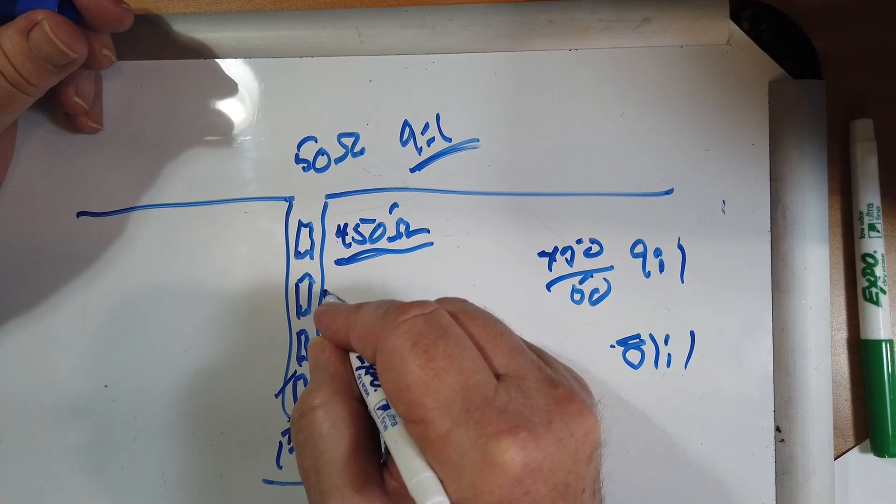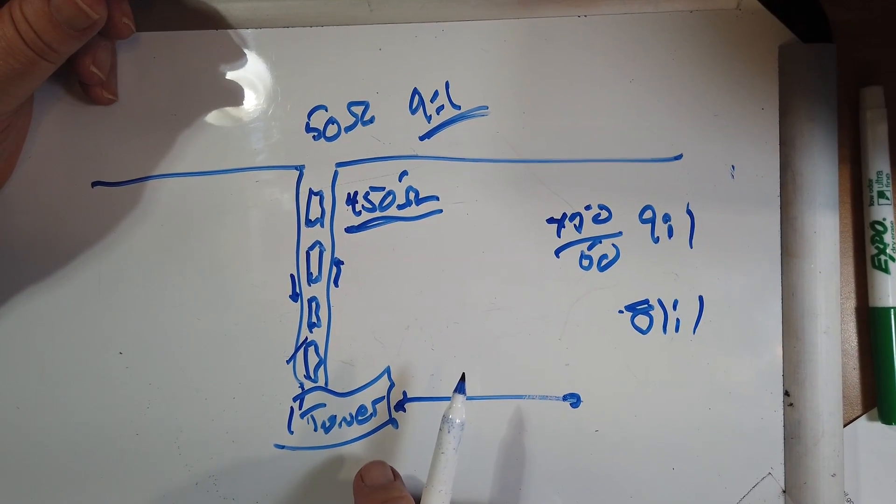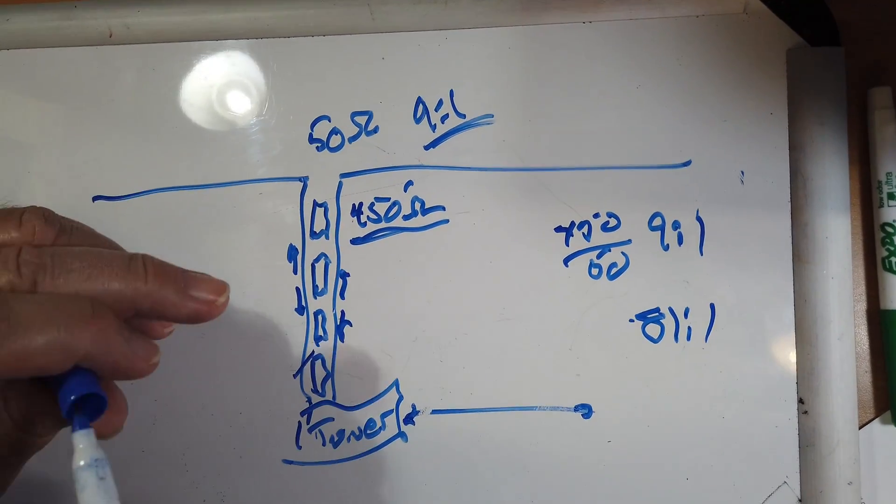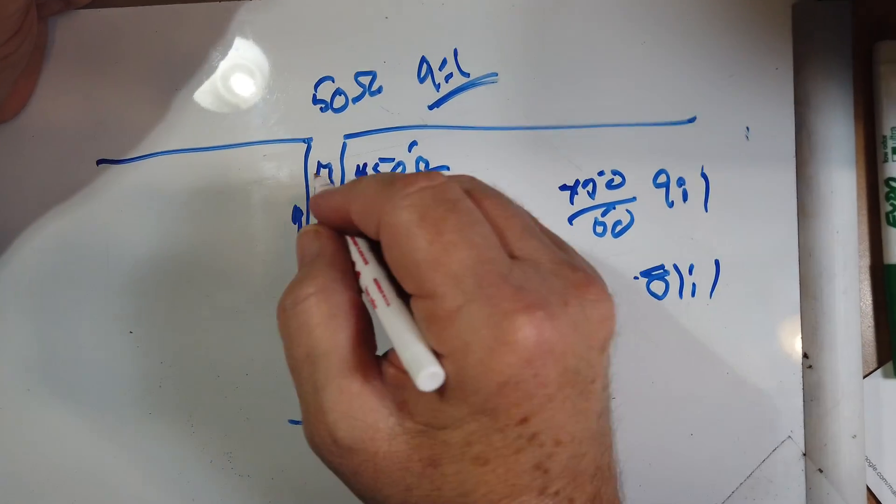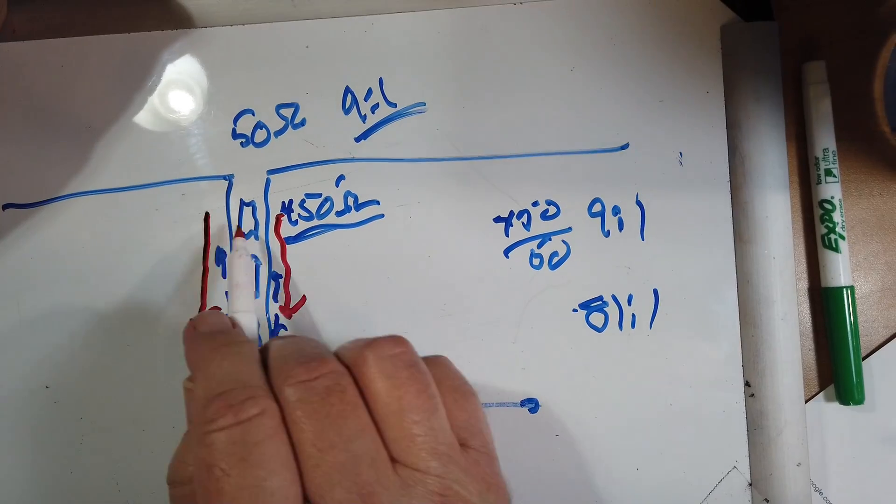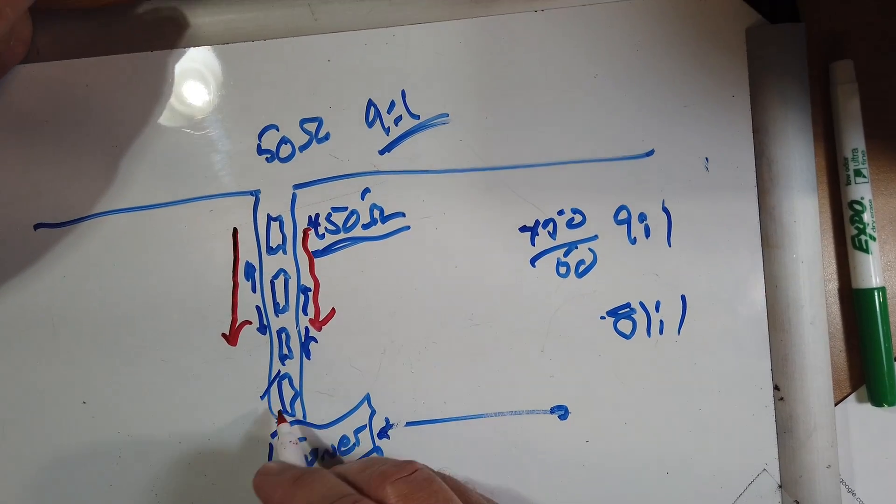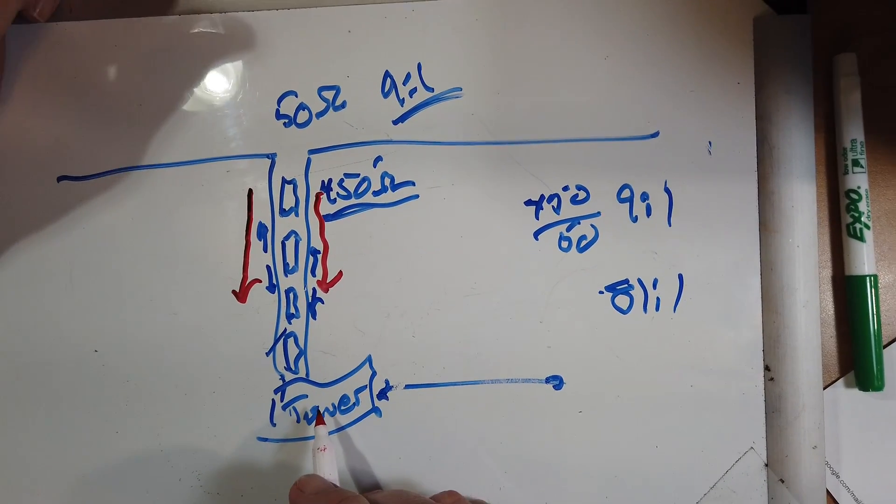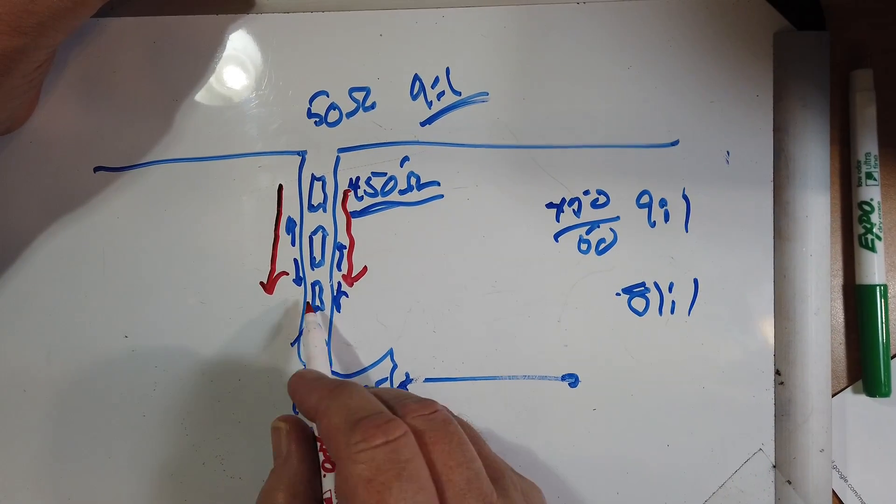Now, in balanced mode, when current goes up here, it goes down here. And then when it goes down here, it goes up here. Now, if there is a common mode current, which there can easily be, if it's going down here, it's going down here as well. It's treating that as though it's one wire.